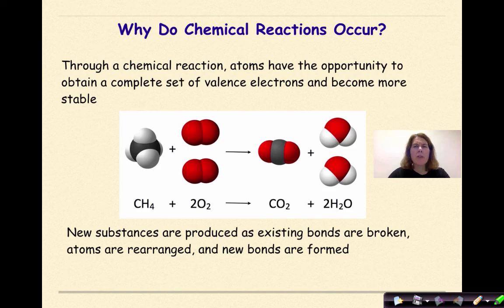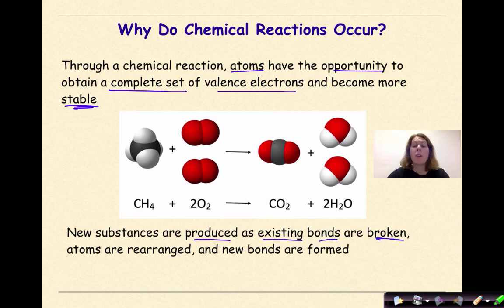So why do chemical reactions occur? Through a complete reaction, atoms have the opportunity to obtain a complete set of valence electrons and become more stable. It's all about the stability. New substances are produced as existing bonds are broken, atoms are rearranged, and new bonds are formed.